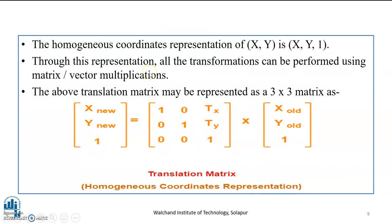Further, when we are representing these coordinates in the homogeneous coordinate representation of x-y, it comes out to be x, y, and 1. Through this representation, all the transformations can be performed using matrix vector multiplication. Thus, the above translation matrix may be represented as a 3-by-3 matrix in the given format as shown here: x-new, y-new, 1, equals the matrix with rows [1, 0, tx], [0, 1, ty], [0, 0, 1] into x-old, y-old, 1. So, this is the representation of the translation matrix using homogeneous coordinates.